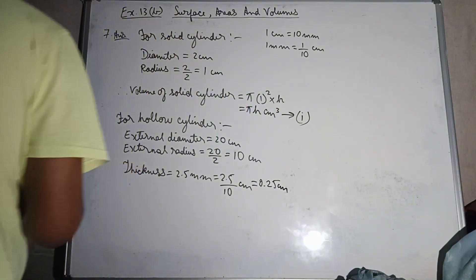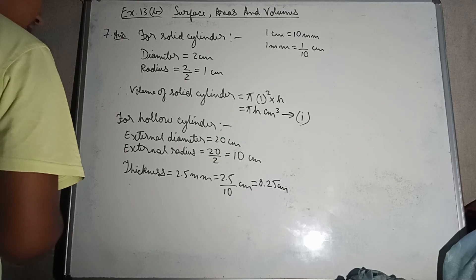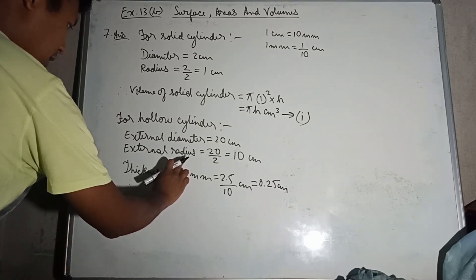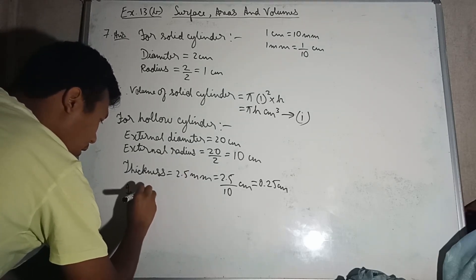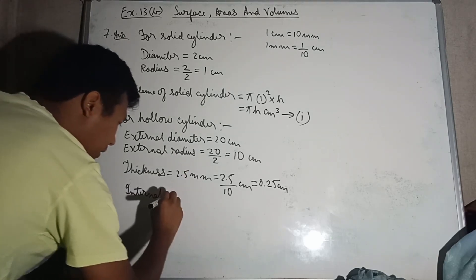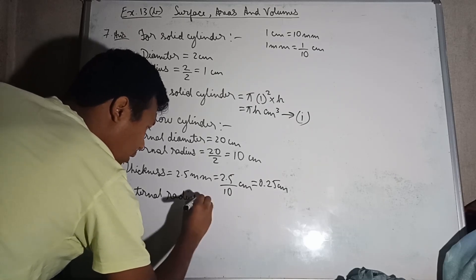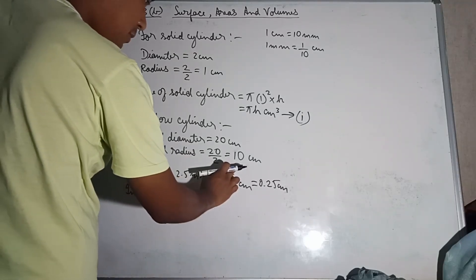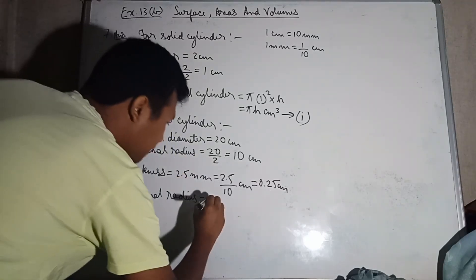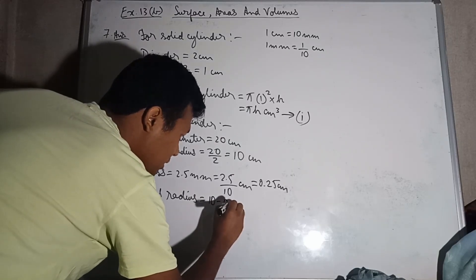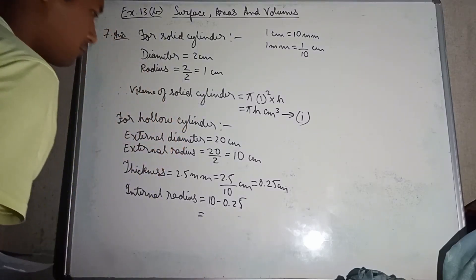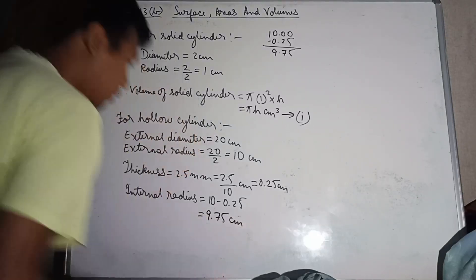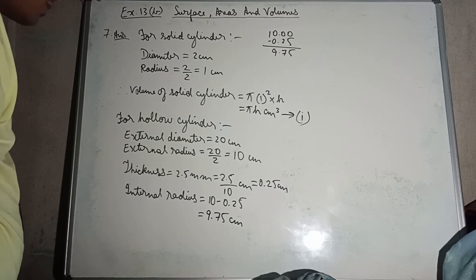The external radius is 10cm (half of external diameter 20cm). The internal radius equals external radius minus thickness: 10 minus 0.25 equals 9.75cm. So internal radius is 9.75cm.